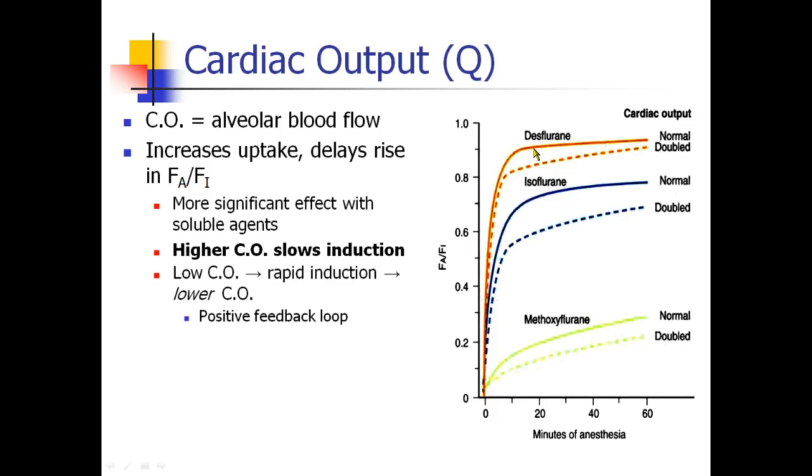And interestingly, this provides a positive feedback loop, because when you put someone to sleep, what happens to their cardiac output? It goes down. And when your cardiac output goes down, induction speeds up. And that makes even more low cardiac output. And then induction speeds up even more. So we can see the cardiac depressant effects of applying high-dose inhalational anesthetic to a patient.